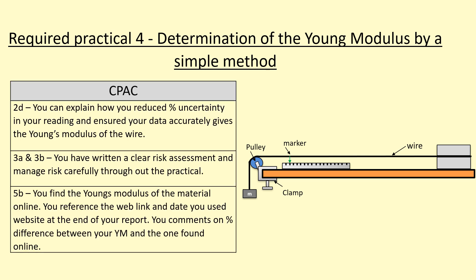In my class you'll be tested on the following CPACs. 2d: that you can reduce the percentage uncertainty in the reading, especially of the extension of the wire, and that finally you're able to determine the Young's modulus fairly accurately.